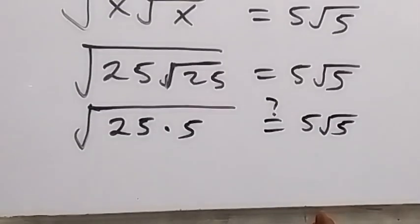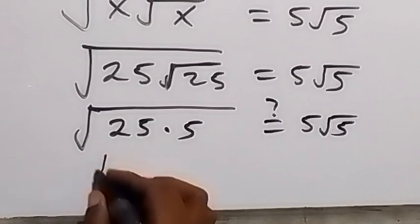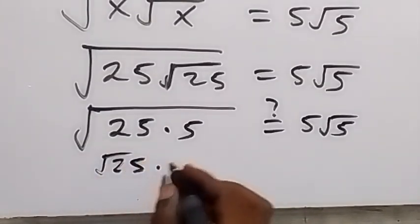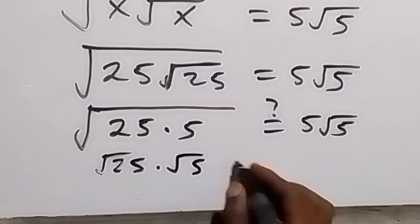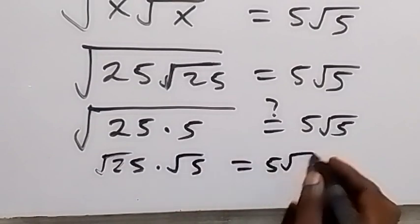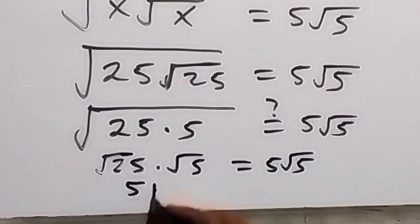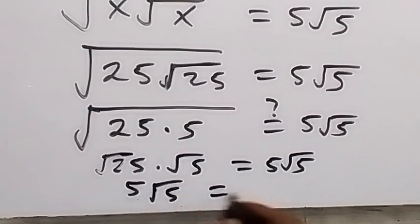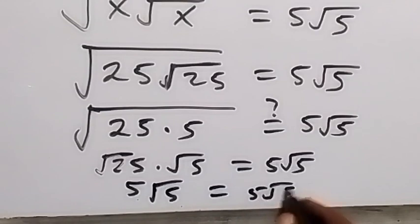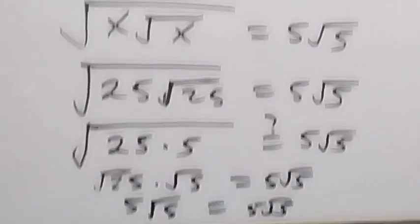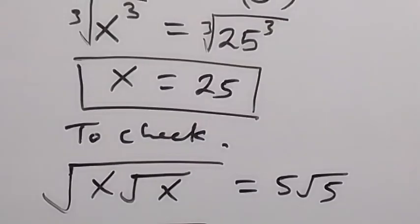We can break this down further: root 25 times root 5 equals 5 root 5. Then root 25 is 5 times root 5, which is 5 root 5, which equals 5 root 5. The left hand side equals the right hand side. Therefore x equals 25 is the correct solution to this problem. Thank you, subscribe to my channel, and see you in the next class!